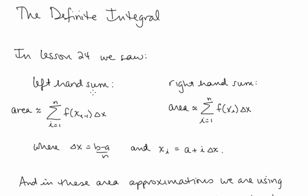The left-hand sum is a summation i going from 1 to n of f of x i minus 1, delta x. And the right-hand sum is a summation i going from 1 to n of f of x i, delta x. In both cases, delta x equals b minus a over n, and x i equals a plus i delta x.